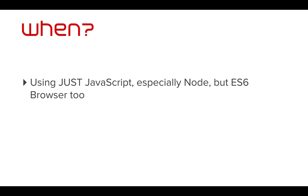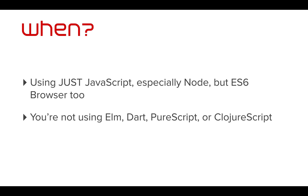You use Folktale when you're using plain JavaScript, especially in Node, but also ES6 or ES5 in the browser. If you're using something like Elm, Dart, PureScript, or ClojureScript, you already have a lot of these concepts built in. Elm already has a lot of functional concepts built in; PureScript borrows a lot from Haskell and Clojure. If you're just doing JavaScript, you want to use a library for these functional concepts without setting up a compiler chain — very similar to how you borrow functions from Lodash.